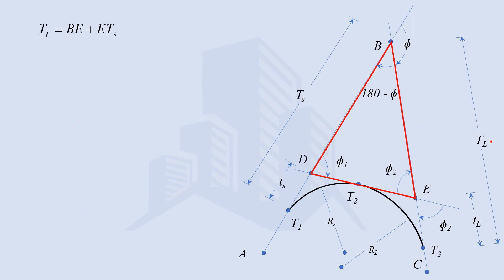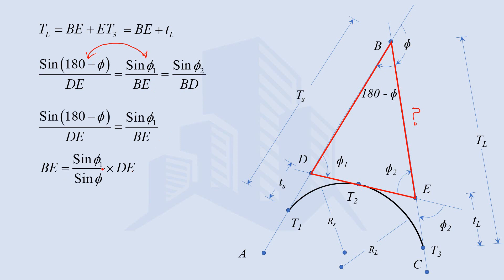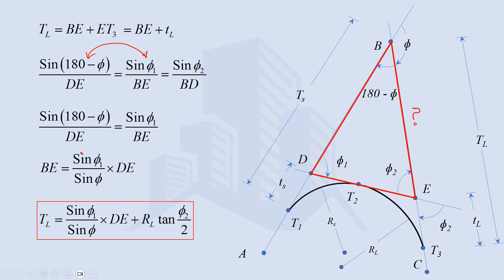For total tangent length on the longest side, it equals PE plus ET3. ET3 is the tangent length for the long curve and can be calculated directly. PE is calculated again by applying sine law. On simplifying, PE is expressed in terms of D, and since we know D, the final formula for TL — total tangent length on longest side — uses the same variables as in TS.